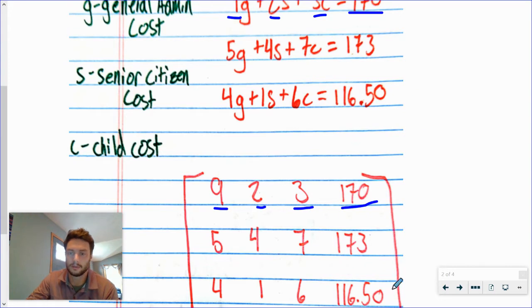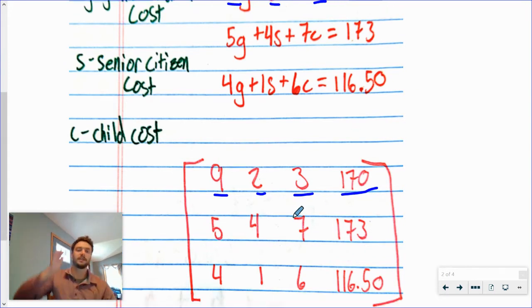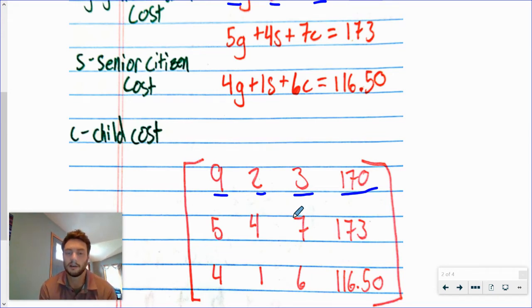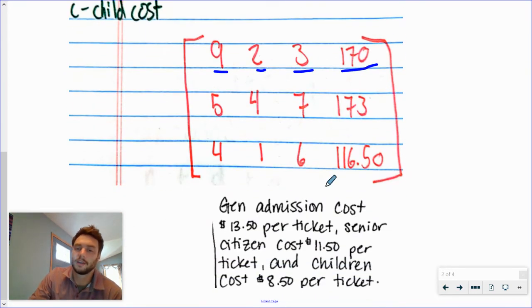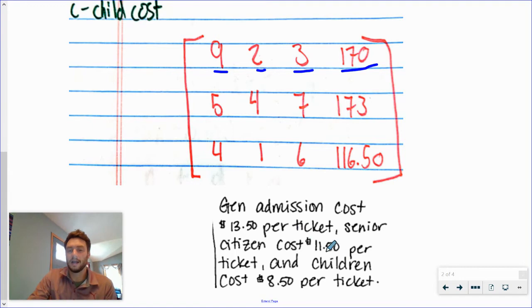Same thing for the second row: five, four, seven, and 173. Then you're just plugging this into your calculator. If you don't remember how to do that, I'll be linking a video right next to this one showing how to plug them in — you may have forgotten over the long weekend. Just remember: you're going to the matrix menu, editing your matrices, then going over to math in that matrix menu and finding RREF and applying it. If you do so, you should get that general admission is $13.50, senior citizen is $11.50, and children's tickets are $8.50.